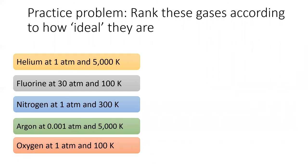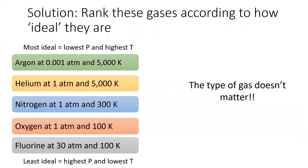Time for a practice problem. Rank these five gases according to how ideal their behavior is. The solution is to put the gases with lowest pressure and highest temperature at the top — the type of gas doesn't matter for this problem. The argon sample has the lowest pressure and highest temperature, so it behaves most ideally. Next is helium at the same temperature but higher pressure, then nitrogen at a lower temperature, then oxygen at a lower temperature still, and lastly fluorine, which is least ideal at the highest pressure and lowest temperature.